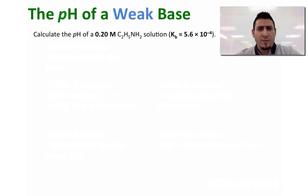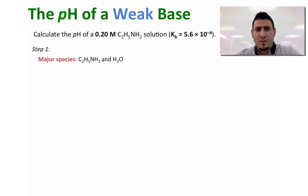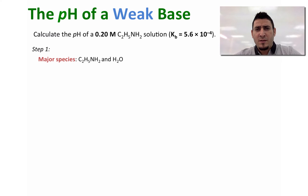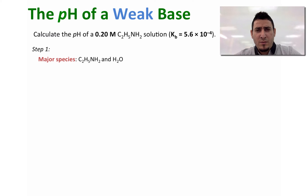In step one, we have to write the major species in solution. Now ethylamine is a weak base, so therefore it will not react completely with water, and the major species is going to be the base itself. And we also have water.